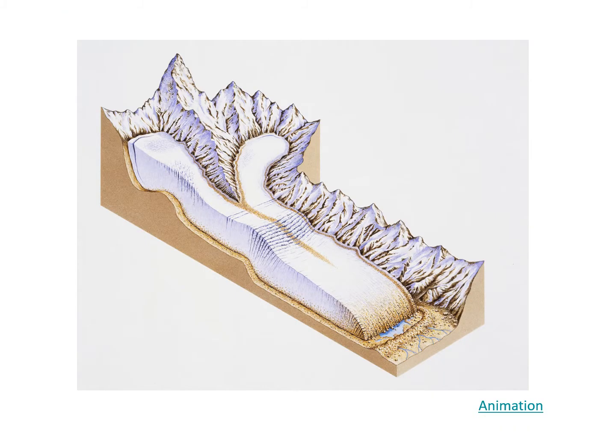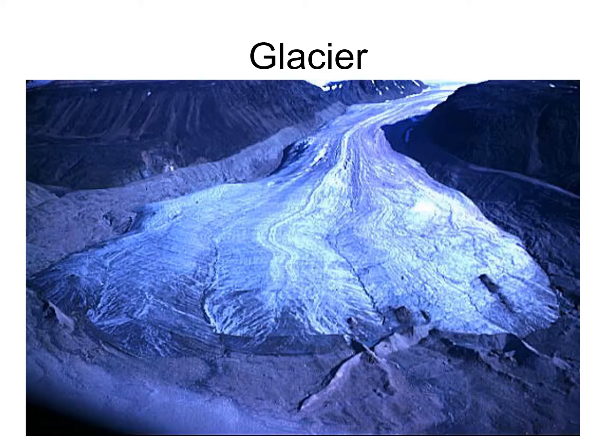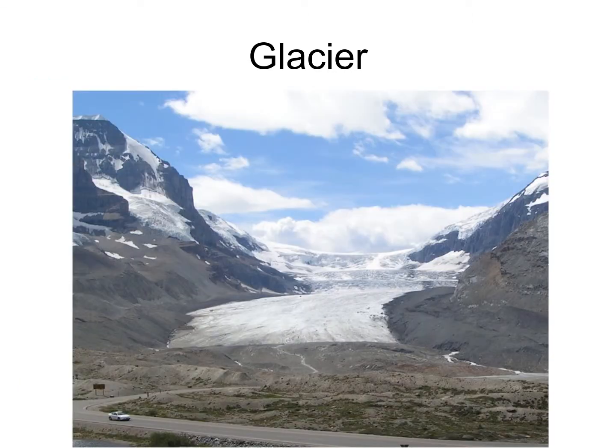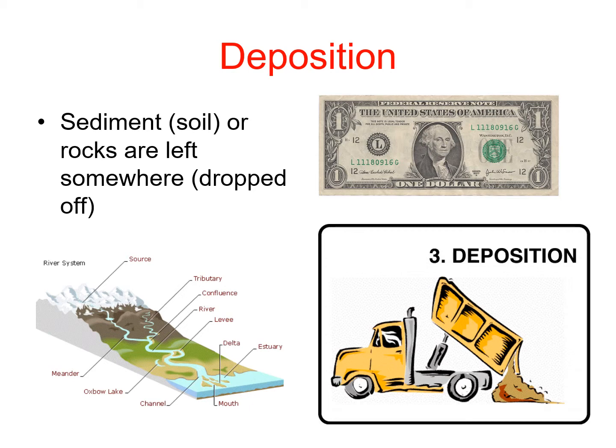Here's another example of a moraine — you can see it down at the bottom, and it can tell you how big the glacier used to be. Deposition is when stuff gets dropped off. The way I remember this is I think of when you go to the bank and make a deposit — you're dropping off something, you're dropping off money. So that's what happens with deposition: you're dropping off the sediment.